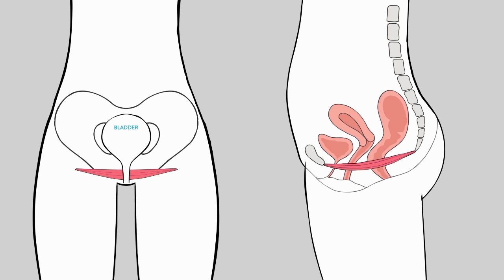Shaped like a hammock, the pelvic floor holds all the pelvic organs: uterus, vagina, bowel, and bladder in place.